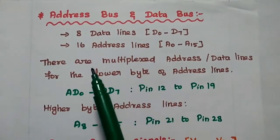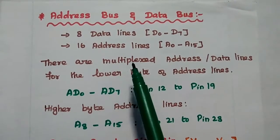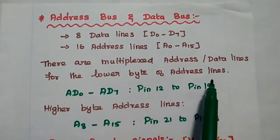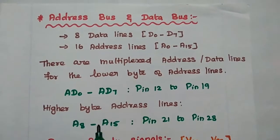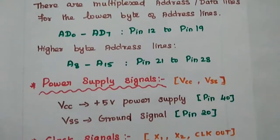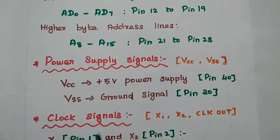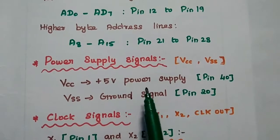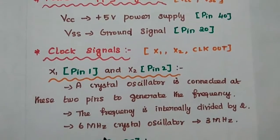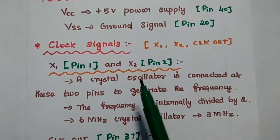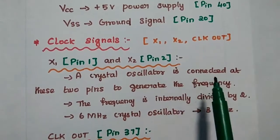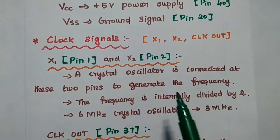Let's discuss each signal in detail. Regarding the address bus and data bus: the 8085 has 8 data lines and 16 address lines. The multiplexed address and data lines carry the lower byte of address lines — AD0 to AD7. The higher byte address lines are A8 to A15. The power supply signals are VCC, connected to plus 5V, and VSS, which is the ground signal. For clock signals, X1, X2, and Clock Out are the three clock-related signals. A crystal oscillator is connected at X1 and X2 pins to generate the frequency.